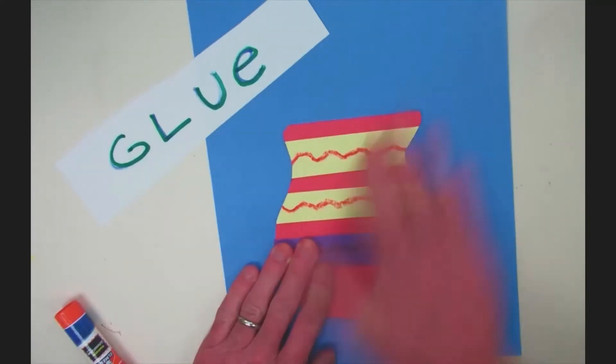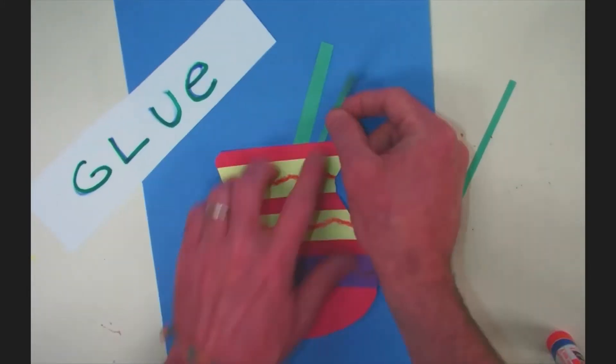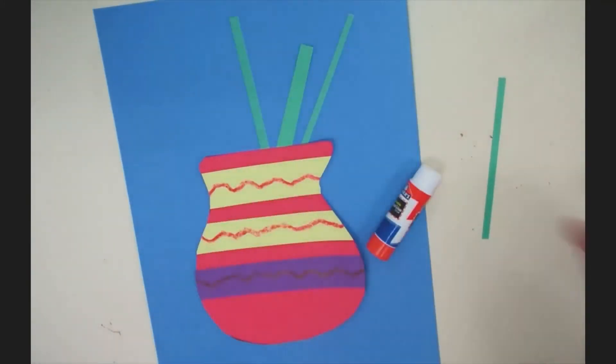When gluing, be sure to leave the top of your vase unglued so you can slide the stems of your flowers down into it.